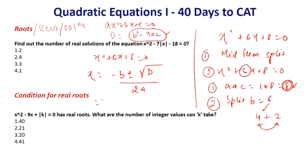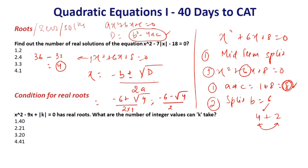Let's apply this to x² + 6x + 8 = 0. The discriminant is b² − 4ac = 36 − 4×1×8 = 36 − 32 = 4. So one root is (−6 + √4) / (2×1) = (−6 + 2) / 2 = −4/2 = −2. The other root is (−6 − √4) / 2 = (−6 − 2) / 2 = −8/2 = −4. So the roots are −2 and −4, confirming our earlier result.